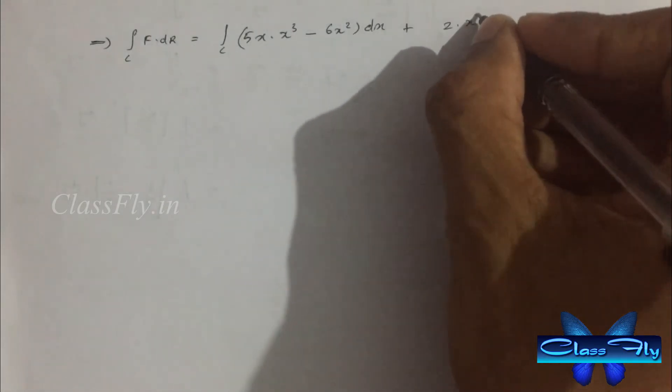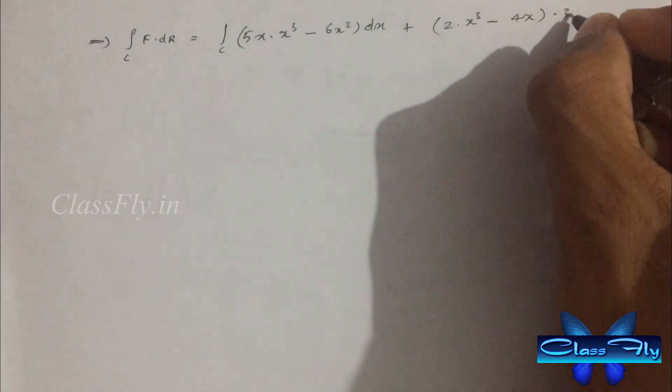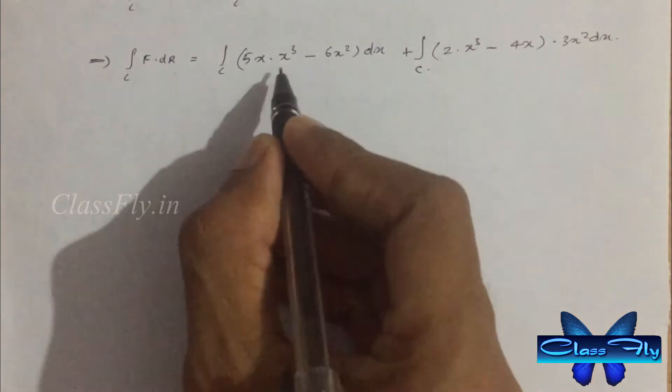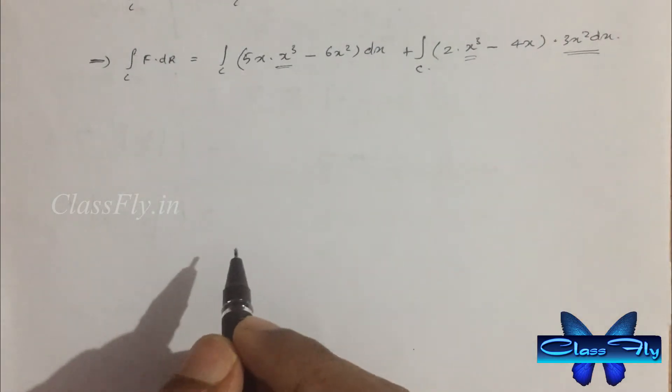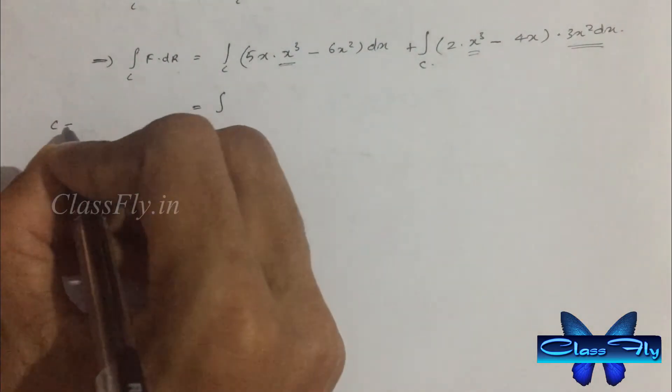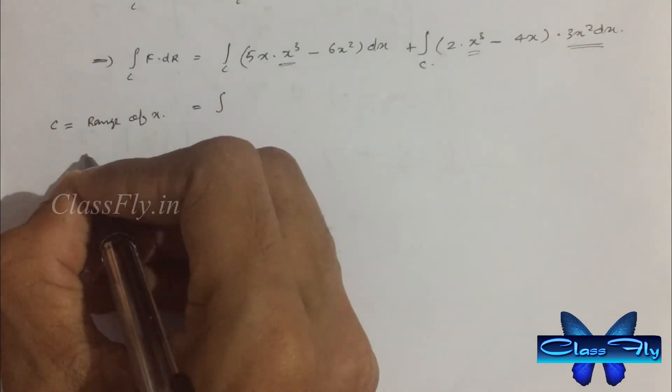After substituting we will get integral c f dot dr is equal to integral c 5x into x cube minus 6x square dx plus integral c 2x cube minus 4x into 3x square dx.